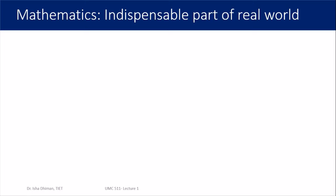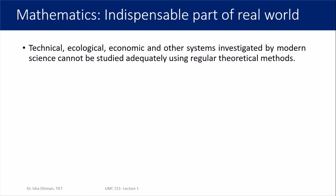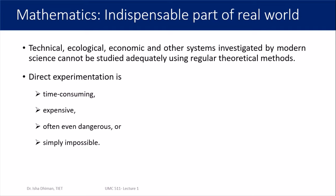It is clear that mathematics is an indispensable part of the real world. I would suggest you pause here and try to think of at least one example where mathematics is not used at all — and I know you will not be able to find such an example. To name a few applications: technical, ecological, economic, and other systems investigated by modern science cannot be studied adequately using regular theoretical methods alone, so we need a mathematical framework.